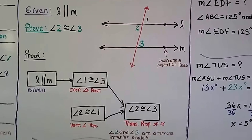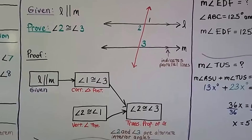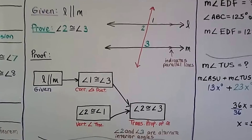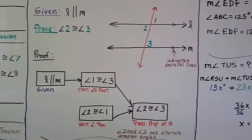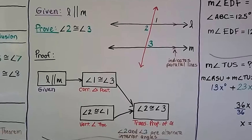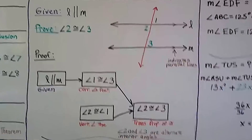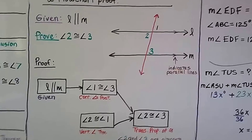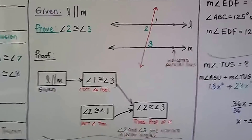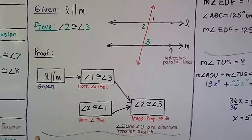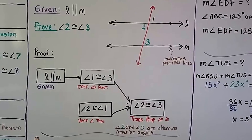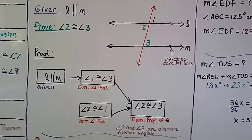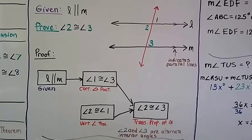That brings us to angle 1 is congruent to angle 3 by the corresponding angles postulate. Then we've got angle 2 is congruent to angle 1 because of the vertical angles theorem. We know 1 and 2 are congruent to each other because they're on opposite sides of each other — we learned that early on. That leads us to angle 2 is congruent to angle 3 because of the transitive property of congruence. 2 and 3 are alternate interior angles.